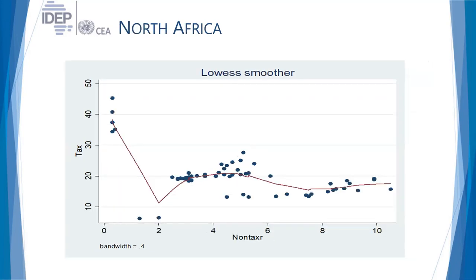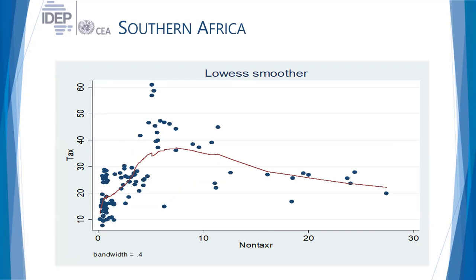North Africa shows a very volatile relationship with a multimodal pattern that is purely non-linear with no meaningful discernible pattern. Southern Africa is broadly negative but clearly non-linear. The advantage of the locally weighted smooth regression technique non-parametrically is that you don't impose any functional form. This tells us that if you set up a model linking tax revenue with non-tax revenue, you must allow for quadratic terms because of the non-linear relationship.